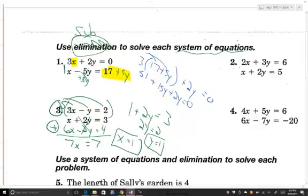So we have 51 plus 17y equals 0. So 17y equals negative 51 and divided by 17, y equals negative 3.